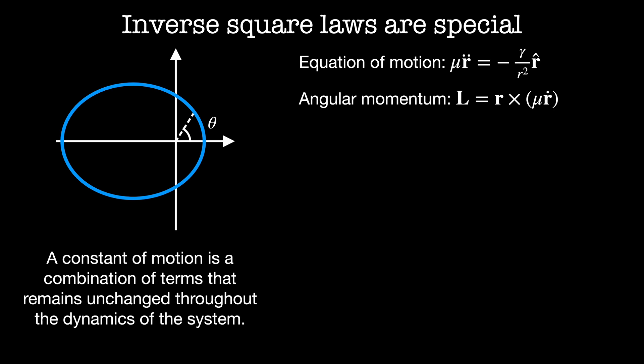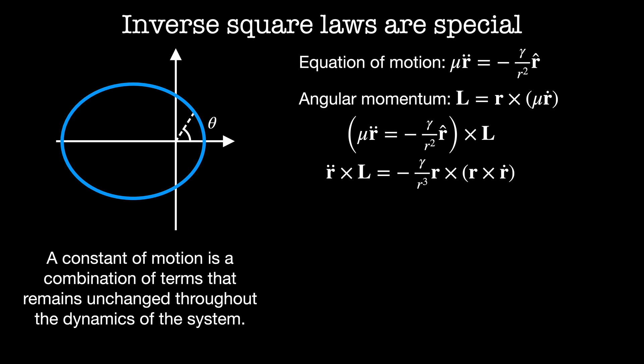Now we're going to do something that's a little strange: we're going to take the cross product of the force equation with the angular momentum. It's not obvious at this stage why this makes any sense, but the algebra will lead us somewhere interesting. We're going to expand the r-hat term using its definition — the vector r divided by its magnitude. Then the left-hand side gives us r double dot cross the angular momentum L, and the right-hand side is minus gamma divided by r cubed times r cross r cross r dot. I've divided both sides through by a factor of mu — one factor from the left side and the other from the linear momentum component of the angular momentum.